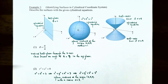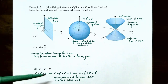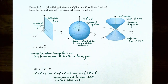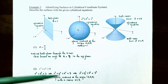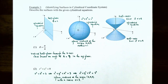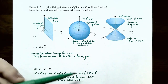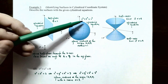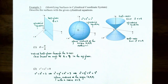Number two: r squared plus z squared equals 9. Since r squared equals x squared plus y squared, we can substitute to get x squared plus y squared plus z squared equals 9. All variable terms are squared, and the right side equals 3 squared, so we recognize this as a sphere in three-dimensional space centered at the origin with radius 3. In cylindrical coordinates, r squared plus z squared equals c squared represents a sphere centered at the origin with radius c.